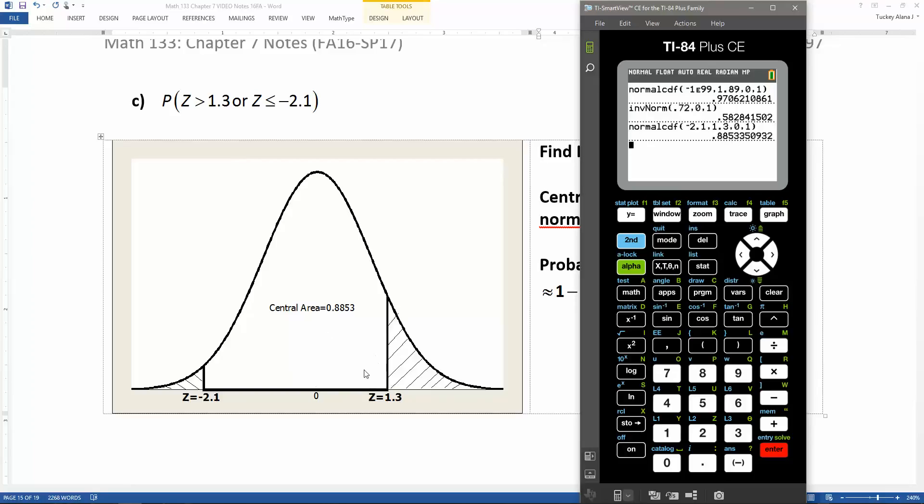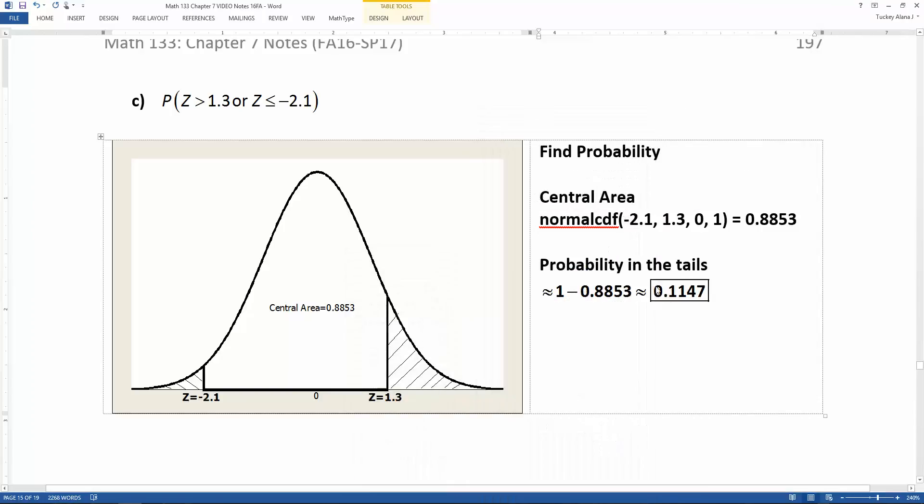Well, that wasn't really what I was looking for. That was the central area. But now to find what I'm looking for, I want to take 1 and subtract that value. You can either do 2nd ANS, which is above your negative sign, or if you have a new operating system, you can actually just go up with your arrow to get that value and press enter. And it's telling you it's 0.1147. Or you can say 1 minus normal CDF, and press enter, and then it finds it. So it's 0.1147.